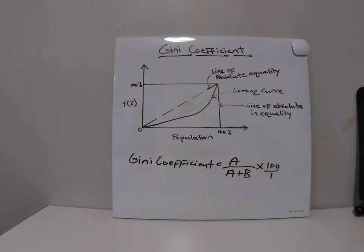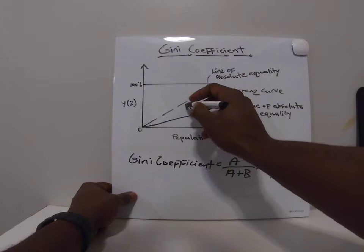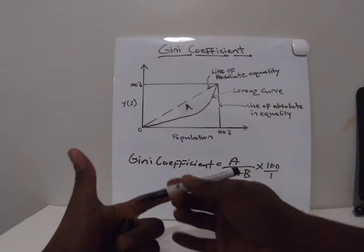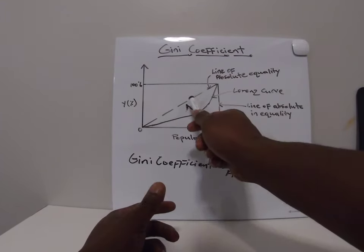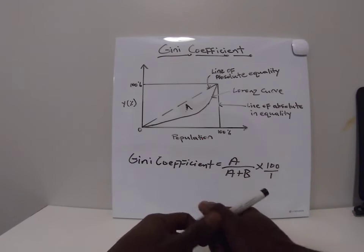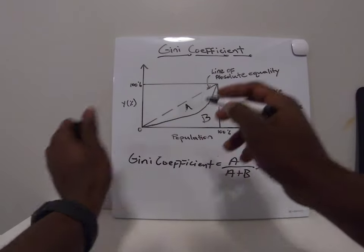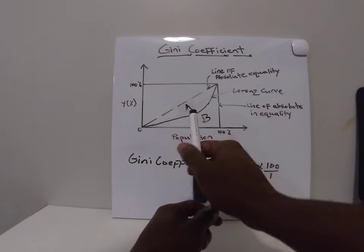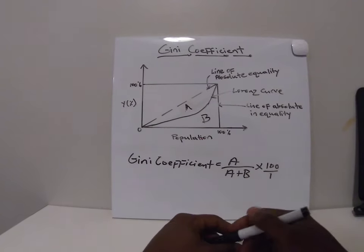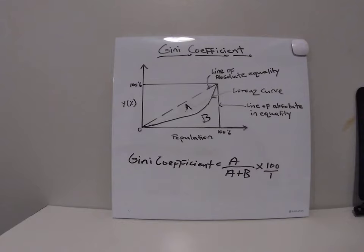How do we identify A and B? A is the area between the line of absolute equality and the Lorenz curve, while B is the area between the Lorenz curve and the line of absolute inequality. This basically shows us how even or uneven the distribution of income is.